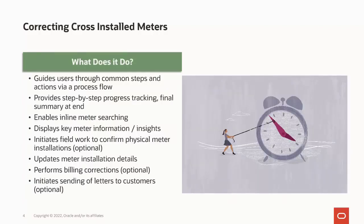The correcting cross-installed meters capability helps a utility's business users correct cross-installed meters efficiently in a consistent manner, by guiding them through the common steps and actions via a process flow. Here are some of the major highlights of the new capability. There is a visual representation at the top of the process flow screen, so a business user can easily see how far along they are in the process flow. At the end of a process flow, a final summary displays key information related to correcting a cross-installed meter situation. It enables inline meter searching, allowing a business user to locate the meters involved.